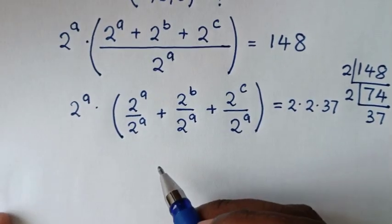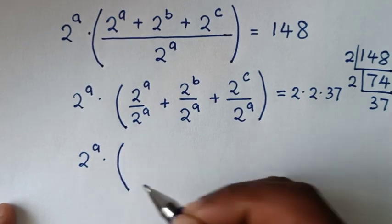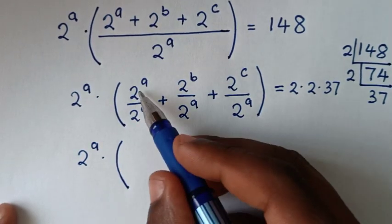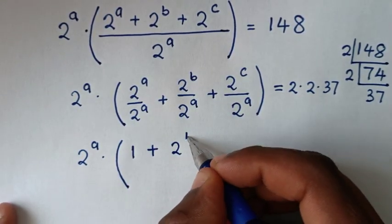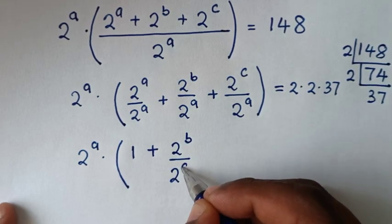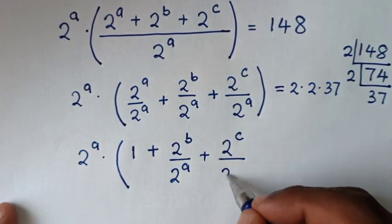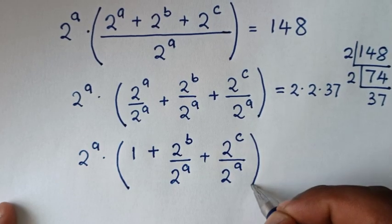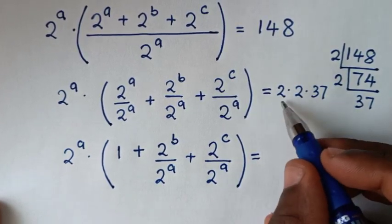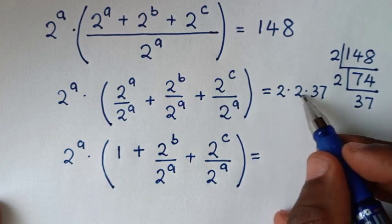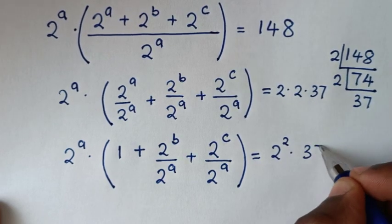Then in the next step, it will be 2 power a times: 2 power a divided by 2 power a is 1, plus 2 power b over 2 power a, plus 2 power c over 2 power a, bracket, is equal to 2 squared times 37.